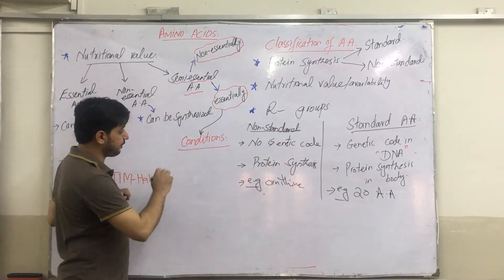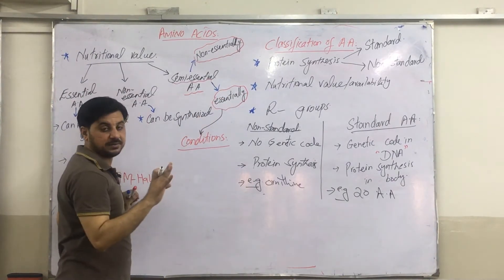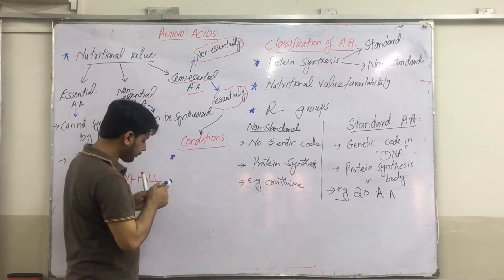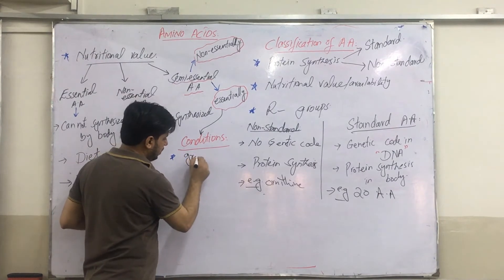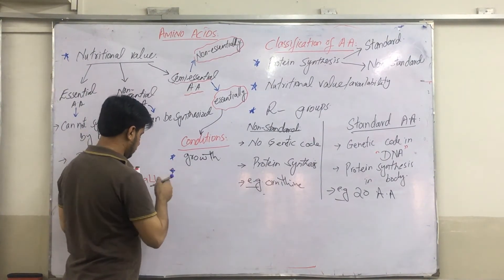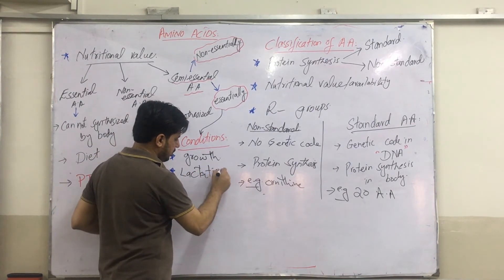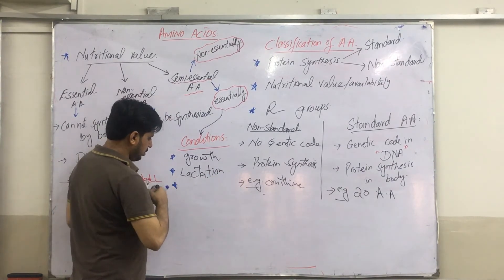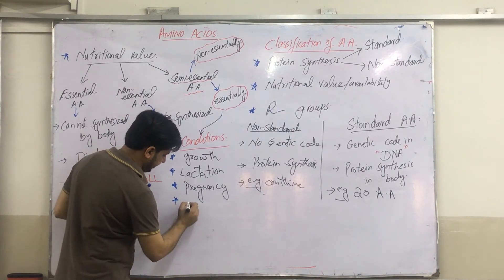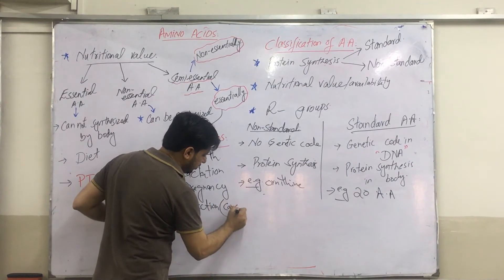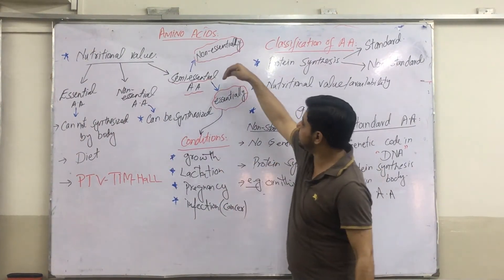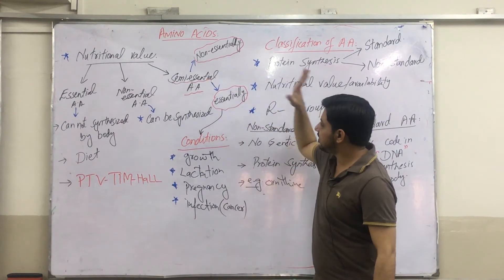Essentially means we have to take them through our diet. The conditions in which semi-essential amino acids behave essentially are: whenever there is growth of the body, whenever there is lactation, pregnancy, and the fourth condition is infection — mostly in cases of cancer. These are the four conditions in which semi-essential amino acids behave as essential amino acids.